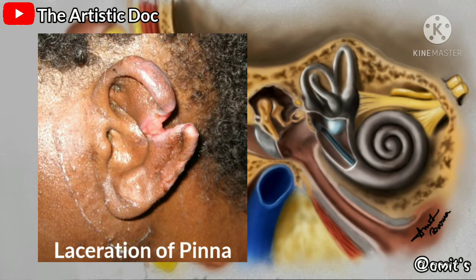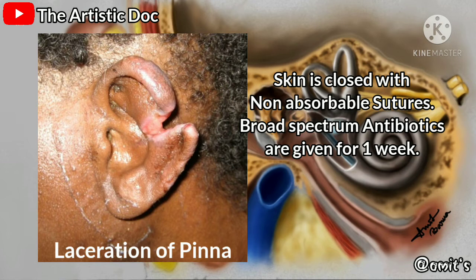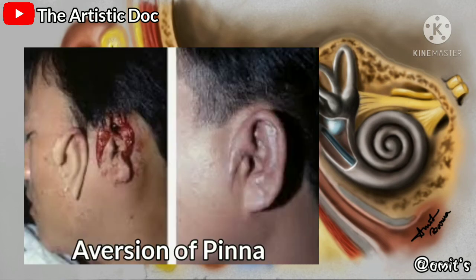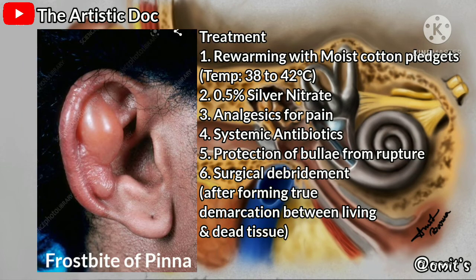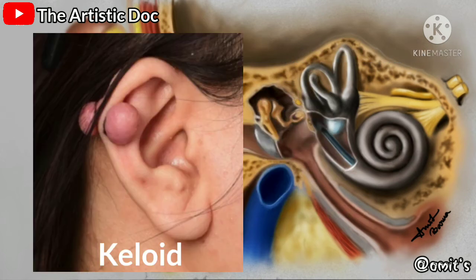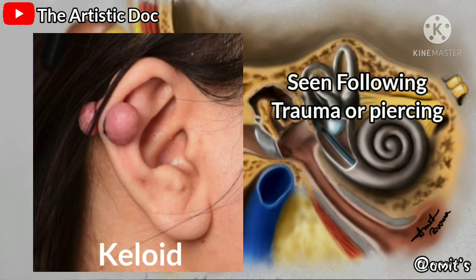Lacerations of the pinna are managed by closing the skin with non-absorbable sutures; broad-spectrum antibiotics are given for one week. Avulsion of the pinna is managed by re-implantation using microvascular techniques; in some cases, after removing a segment of pinna, the cartilage is implanted under postauricular skin. For frostbite of the pinna, treatment consists of rewarming at 38 to 42 degrees with moist cotton pledgets, application of 0.5% silver nitrate, analgesics, systemic antibiotics, protection of bullae from rupture, and surgical debridement after true demarcation forms between dead and living areas.